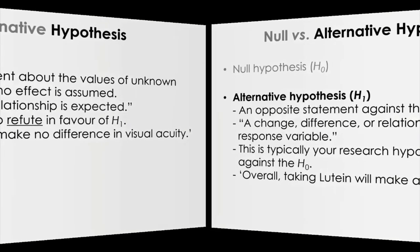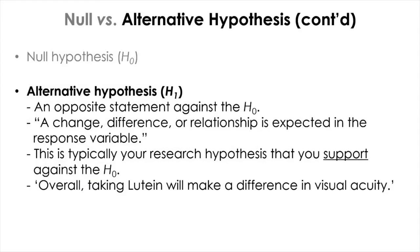The alternative hypothesis is basically the opposite statement against the null hypothesis H0. Typically you assume a change, difference, or relationship in the response variable when setting up an alternative hypothesis. This is typically the research hypothesis you want to support against the null hypothesis. In the lutein example, the alternative hypothesis will be: overall, taking lutein will make a difference in visual acuity.